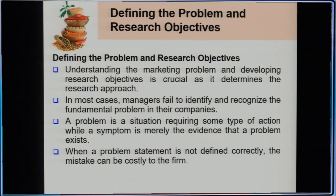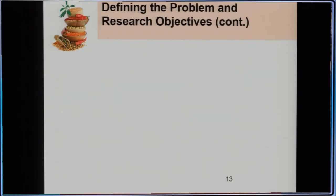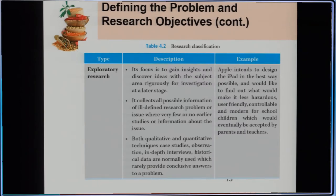It is better to plan thoroughly so we can reduce the costs spent on gathering marketing information. When collecting primary data, it involves a lot of cost. There are three types of research methods that can be carried out to collect marketing information.